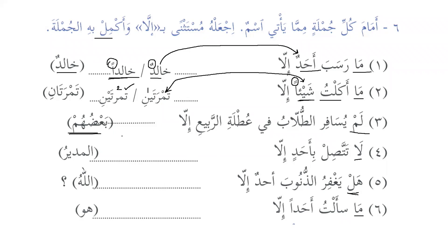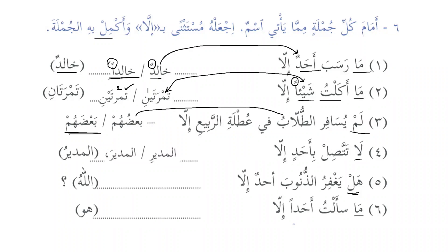'Ba'dahum' — as badal of 'tulab' — and 'ba'dahum' as the mansoob possibility. Then 'la tattasil bi-ahadin illa al-mudira wa illa al-mudiri' — two possibilities: al-mudiri is majroor as badal of 'ahadin,' and the second possibility is al-mudira as mansoob.